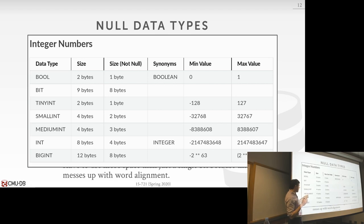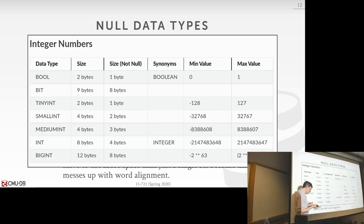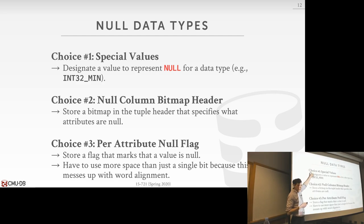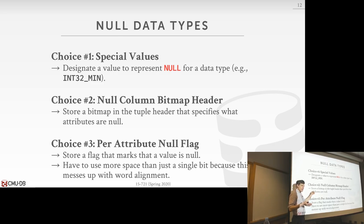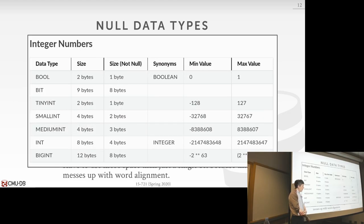So thinking about it — the magic value approach is the smallest to store because you don't take any extra space. The bitmap gets a little larger because you have a single bit for every attribute, but at least it's just a bit and you only need to pad out the bitmap a little. The per-attribute flag requires padding out for every single attribute. A student asks what null is actually used for — is it a tombstone marker? In SQL, you have a three-value type system: true, false, or null, where null means unknown — I don't know what the value is.